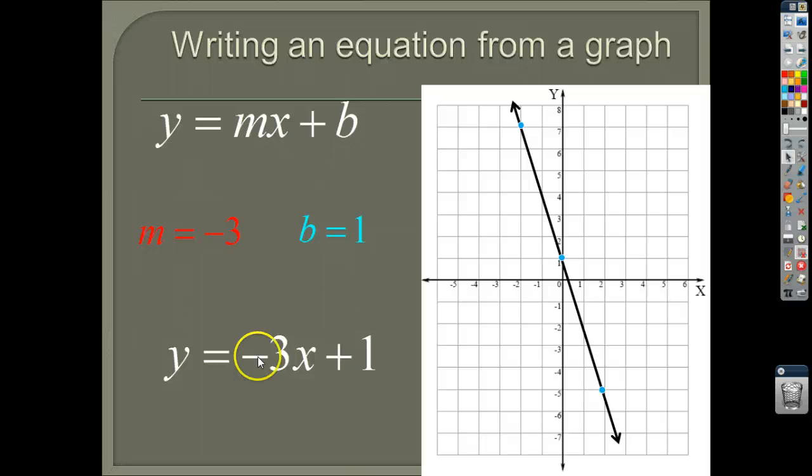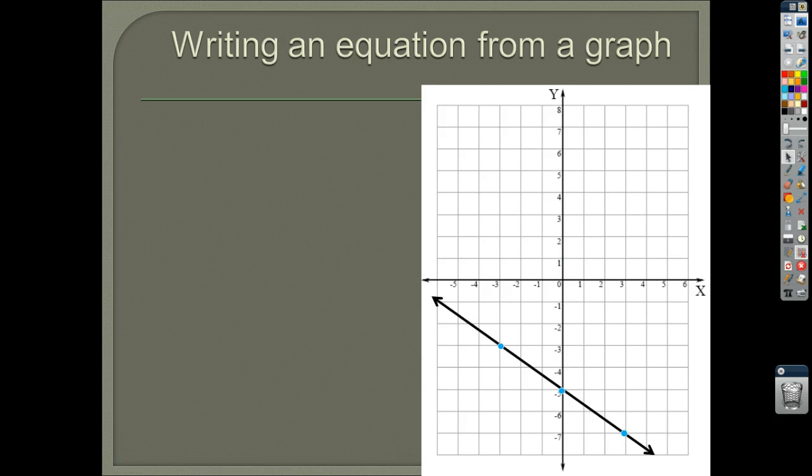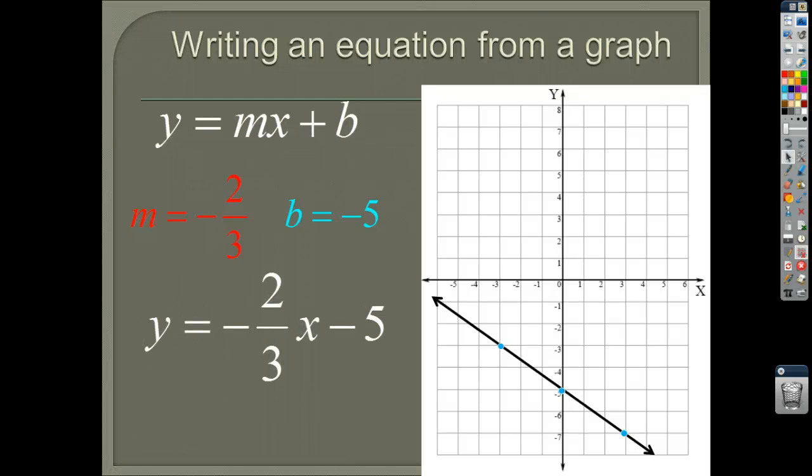Y intercept is 1. Put it in my equation. Y equals negative 3x plus 1. And you should match it up. You should look at this and be like, I see this. Negative 3. It's going to be negative. It should be steeper, right? This number is bigger than the parent function. So it's going to be steeper. And it's going to move up 1 from the parent function. Alright. Let's try another one. You do this one.